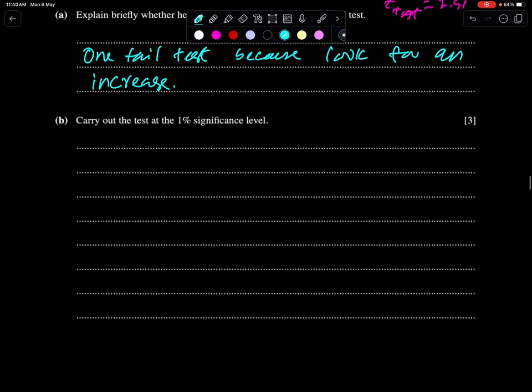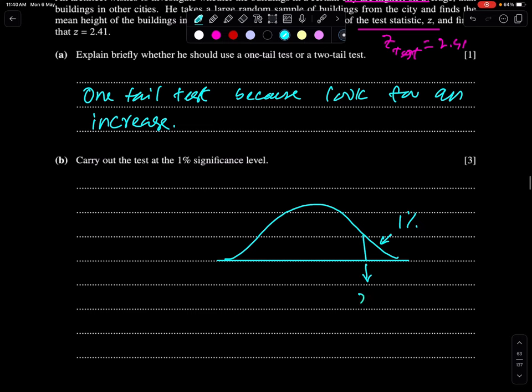Carry out the test at the 1% significance level. We need to check what is the value of 1% either from calculator or normal distribution table. This value is 2.326. This is known as Z-critical. If you are using calculators, put 1% directly. If you are using normal distribution table, then find phi inverse 0.99.